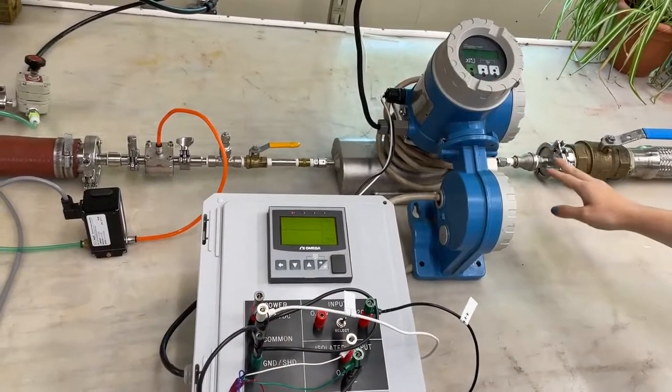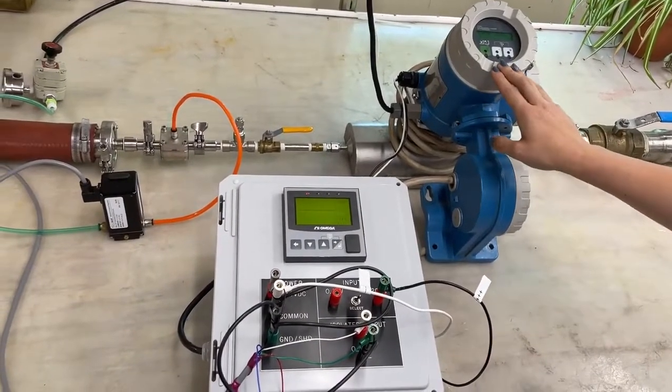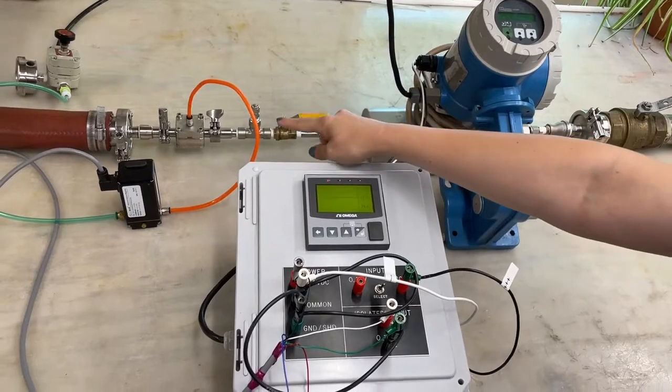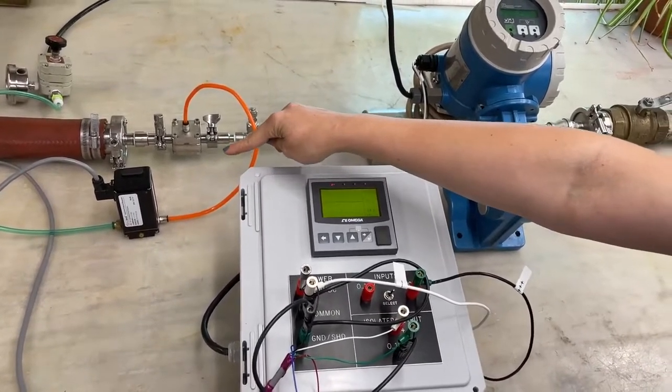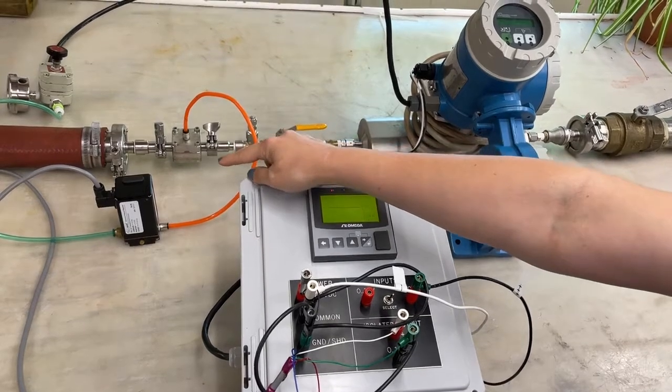Here we have the water coming in to our process through our flow meter and then to our Equilibar flow control valve which is piloted by a high resolution QPV electronic pressure regulator.